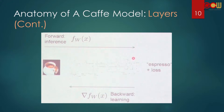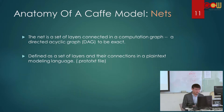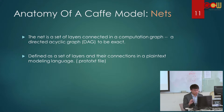The third concept to build a Caffe model is nets. When you want the net to learn what a picture is, that is called backward learning. The net is a set of layers and connections in a computation graph. It looks like a directed acyclic graph, or DAG to be exact.